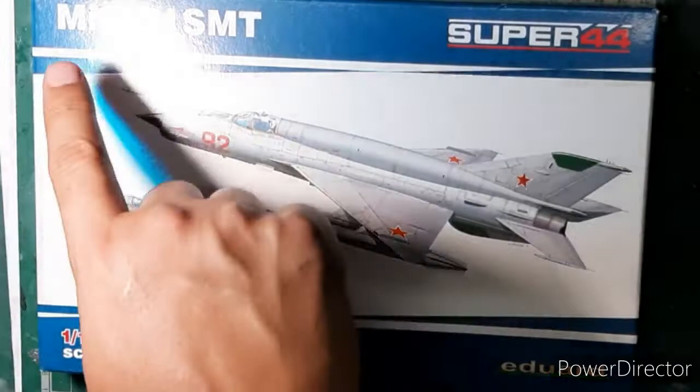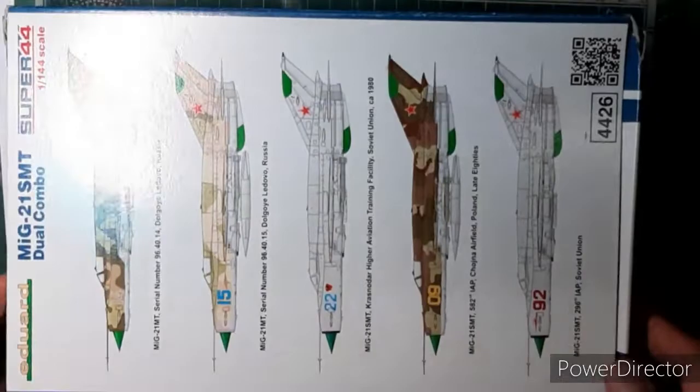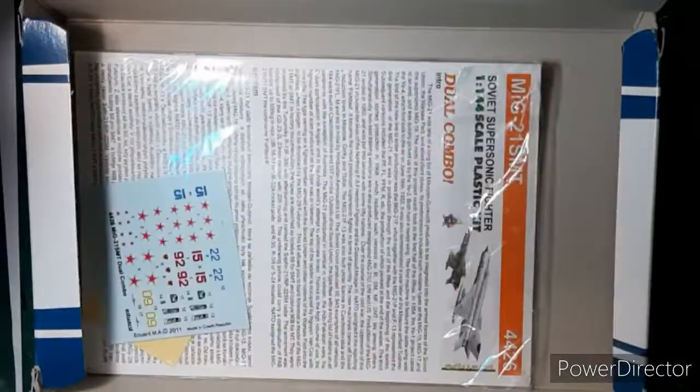I began with this smaller scale model of the MiG-21 SMT in 1:144 scale from the dual combo kit from Eduard, which is part of the Super 44 series. You can see that beautiful box art on the front and on the back. As we open it, we're greeted with these two sprue bags.